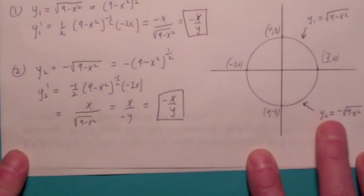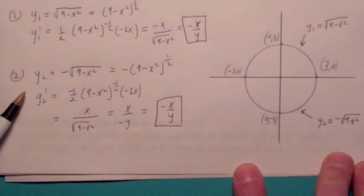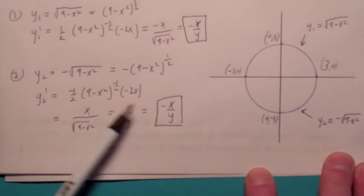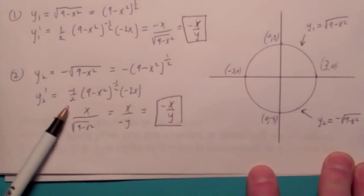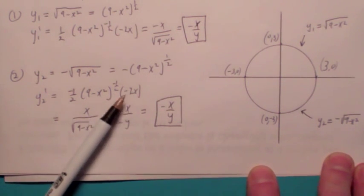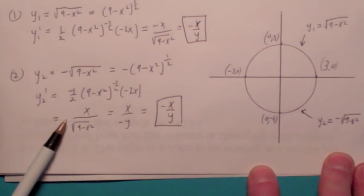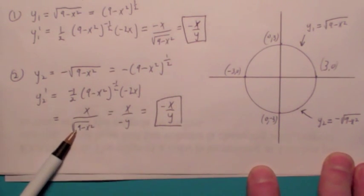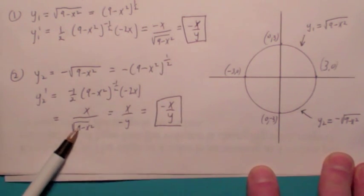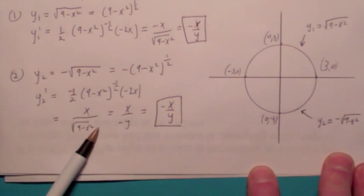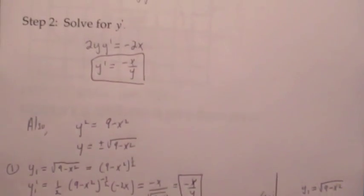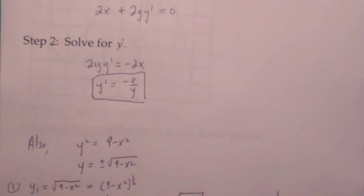The same is true with the bottom half. The bottom half of the circle has the equation y = −√(9 − x²). When you bring the exponent down, subtract 1, and take the derivative of what's inside, the negatives cancel and so do the 2's. Notice this is not y but actually negative y, since y equals negative the square root. When you move the negative up to the top, you again get the same equation we got using implicit differentiation.